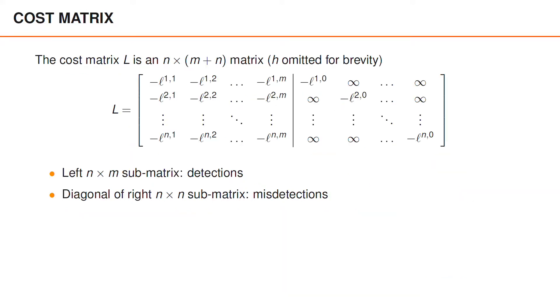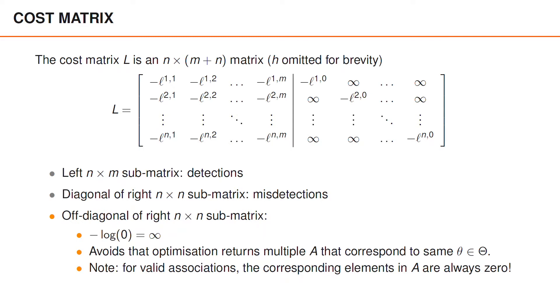We can achieve this by defining the cost matrix as an N by M plus N matrix, where the left submatrix contains the negative likelihoods for the detections and the right submatrix contains the negative log likelihoods for the misdetections along the diagonal.